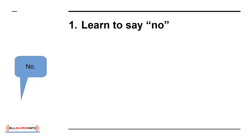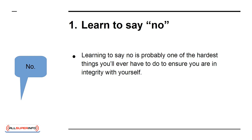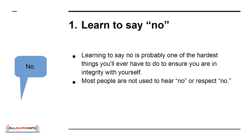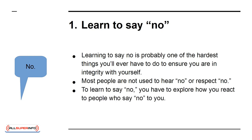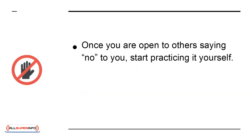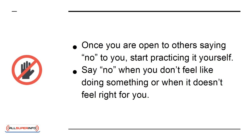1. Learn to say no. Learning to say no is probably one of the hardest things you'll ever have to do to ensure you are in integrity with yourself. Most people are not used to hearing no or respecting the word no. To learn to say no, you have to explore how you react to people who say no to you. Once you are open to others saying no to you, start practicing it yourself. Say no when you don't feel like doing something or when it doesn't feel right for you.